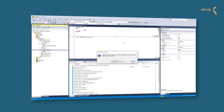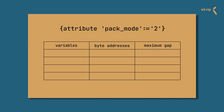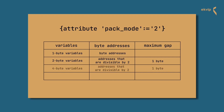If your pack mode is set to 0 or 1, all variables are assigned to byte addresses and no memory gaps occur. If your pack type is 2-byte aligned, then 1-byte variables are assigned to byte addresses, and 2-byte, 4-byte, and 8-byte variables are all assigned to addresses divisible by 2. The maximum gap that may occur is 1 byte.